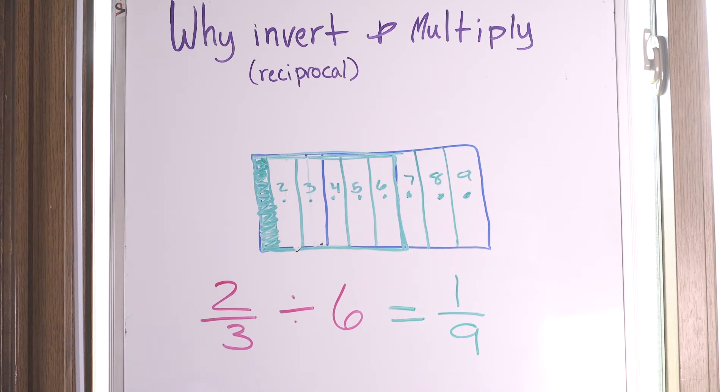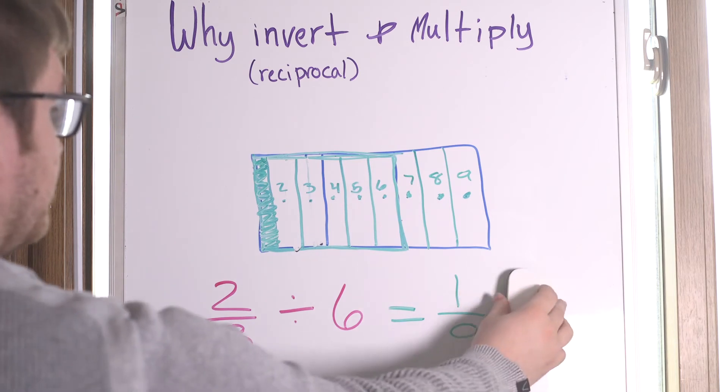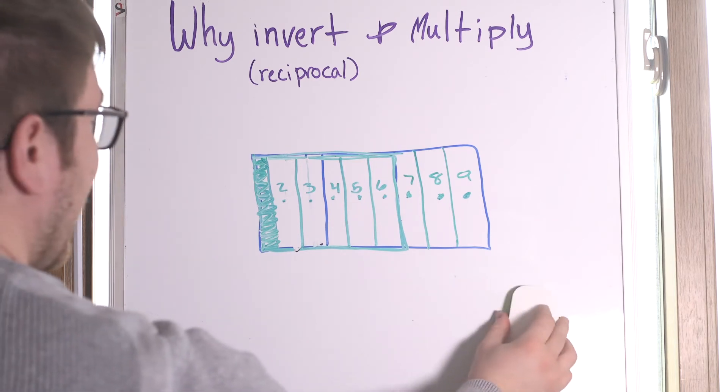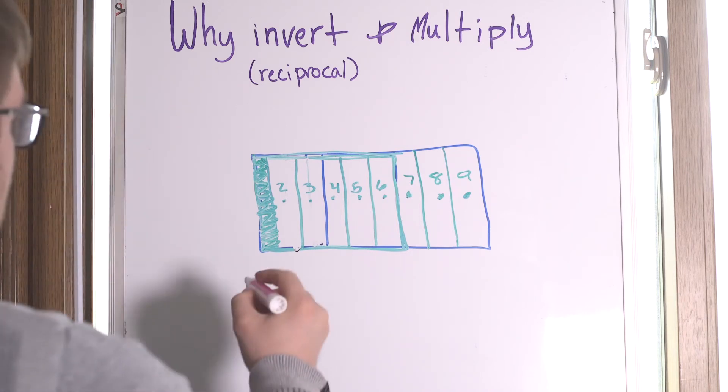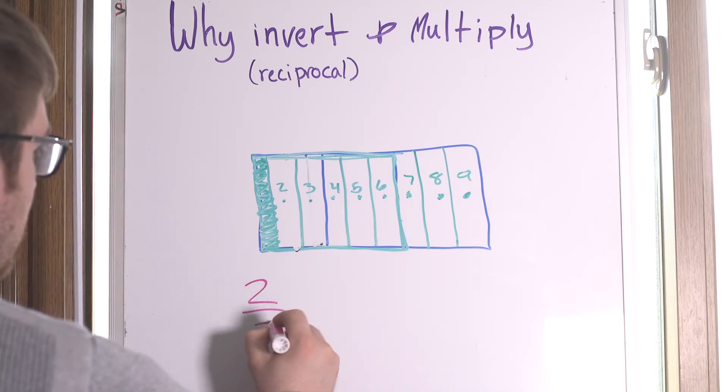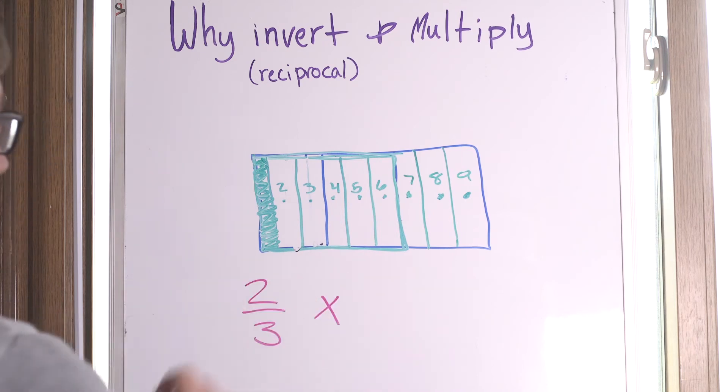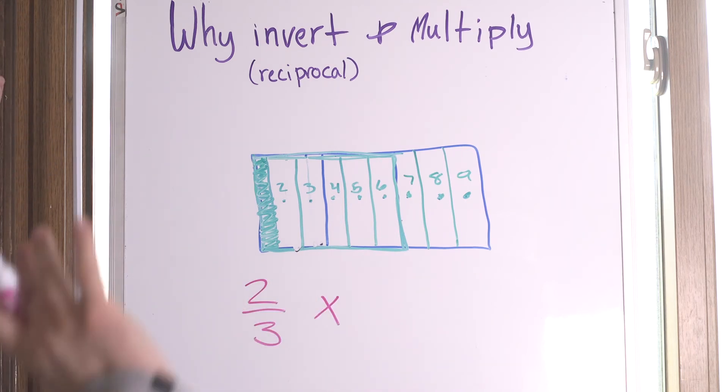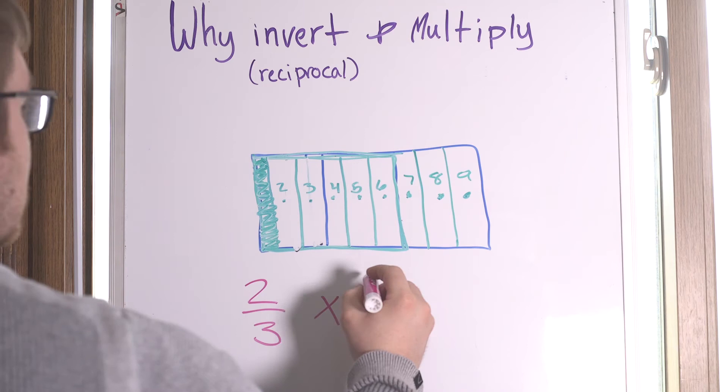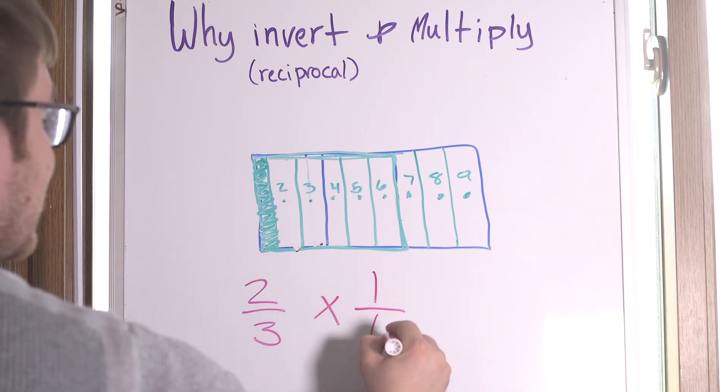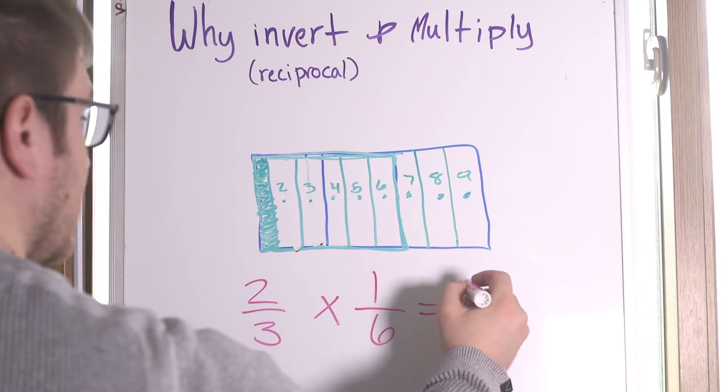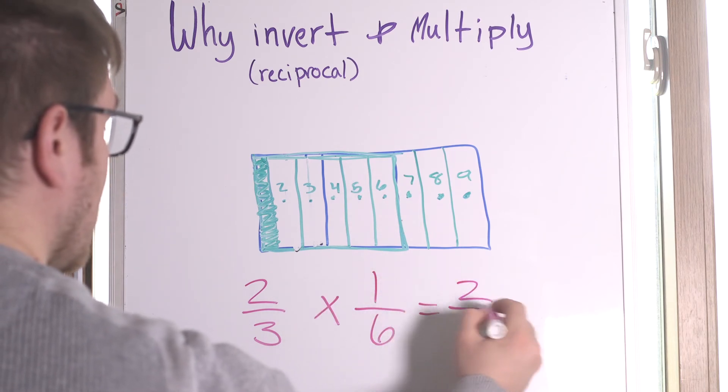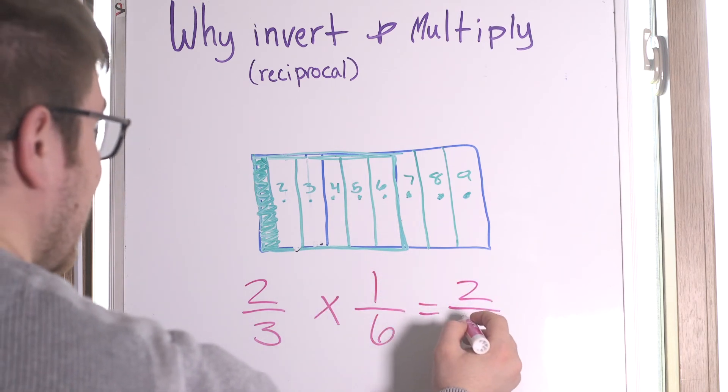So what we have shaded in right here is one ninth of the candy bar. If we rewrite our problem to show why that works, we have two thirds times, remember we're going to use the reciprocal fraction, one sixth. And now we just do some multiplication, two times one is two, three times six is 18.